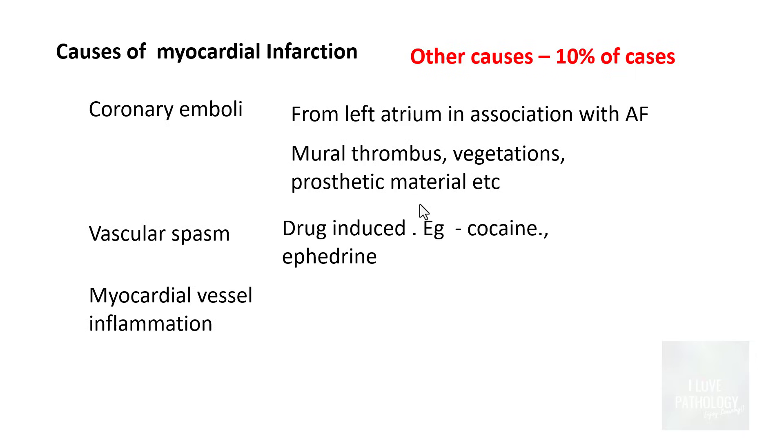Vascular spasm most often are drug-induced, for example cocaine or reserpine. Myocardial vessel inflammation meaning vasculitis, myocardial vessel vasculitis can also result in reduction of blood supply leading on to myocardial infarction.